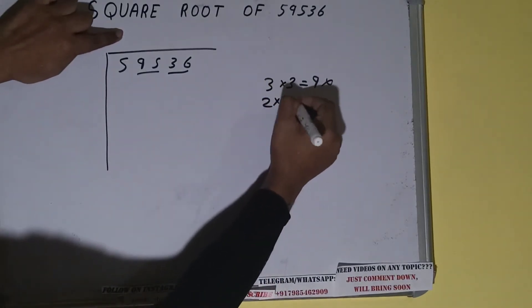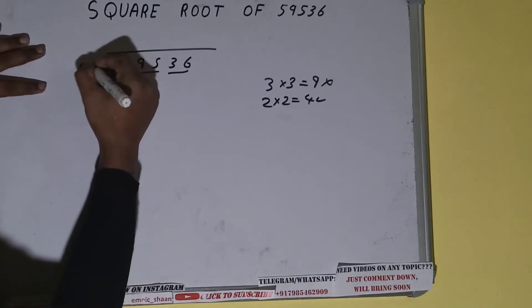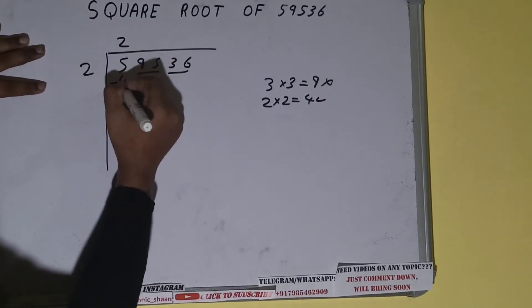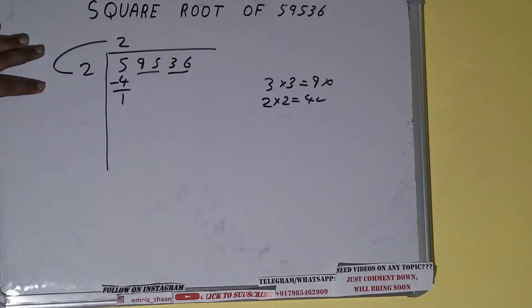If we write 2 here and 2 here, we'll be getting 4, which is good to use. So 2 here and 2 here, 4 subtract, 1 will be left. We did 2 into 2, so add both. So 2 plus 2 will be 4.